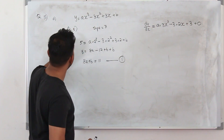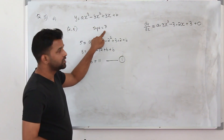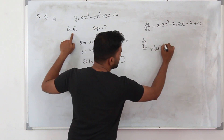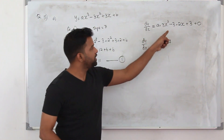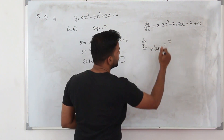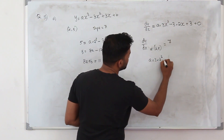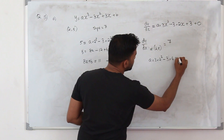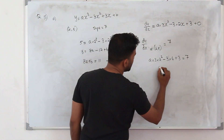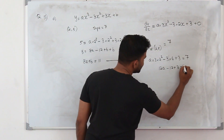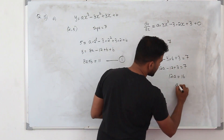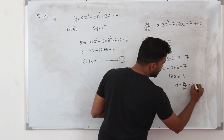The gradient at the particular point (2, 5) is 7. So dy/dx at x equals 2 equals 7. Substitute x equals 2 into the derivative: 3a times 2 squared minus 6 times 2 plus 3 equals 7, which gives 12a minus 12 plus 3 equals 7. So 12a equals 16, therefore a equals 16 over 12, which simplifies to 4 over 3.